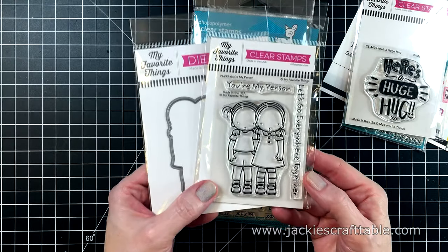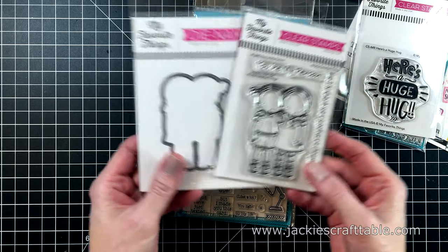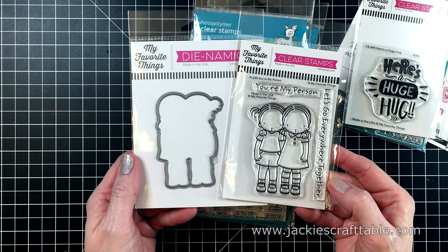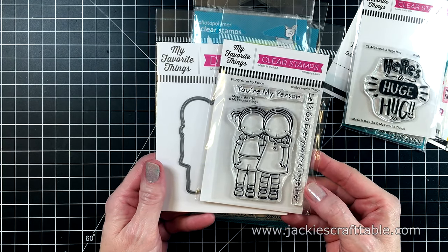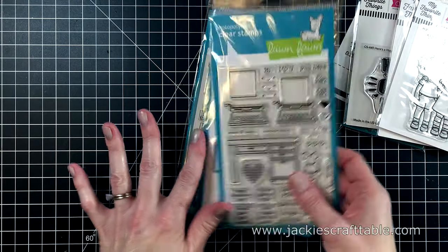I really love the Pure Innocence stamps from MFT. This one's called You're My Person and I got the coordinating die. I just love these little girls, so cute.